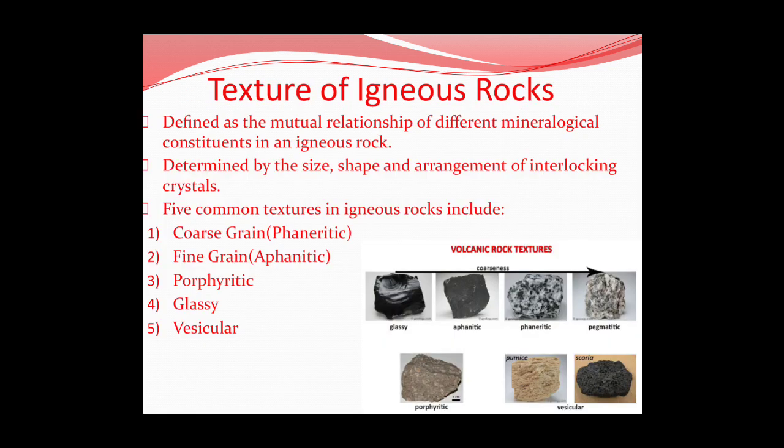Texture of igneous rock has a mutual relationship with the mineralogical content, determined by the size, shape, and arrangement of interlocking crystals. There are five common textures in igneous rocks: phanitic (coarse-grained), aphanitic (fine-grained), porphyritic (a mixture of both coarse-grained and fine-grained structures), glassy, and vesicular. Vesicular refers to long tube-like holes or porous structures.